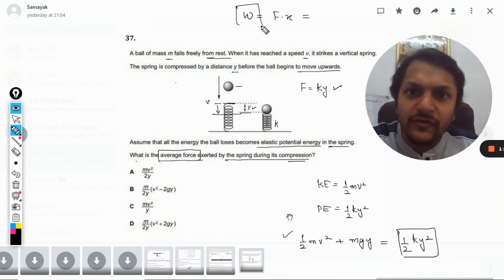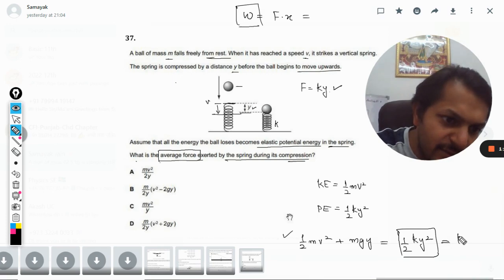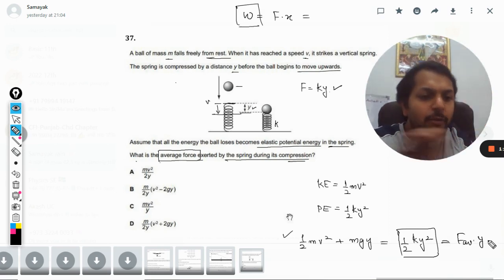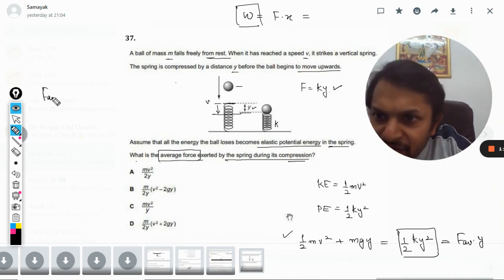So this potential energy should be equal to the work done. So equating both of these, I will say that this will be equal to F average into the displacement, which is y. So now from here we will find F average. We will divide y here, so F average will be...